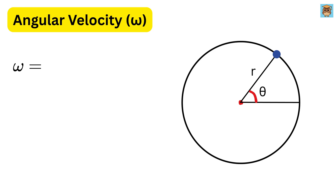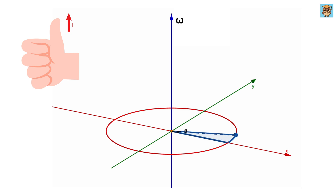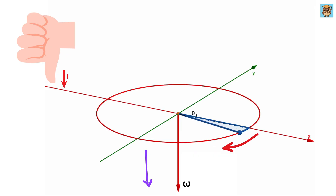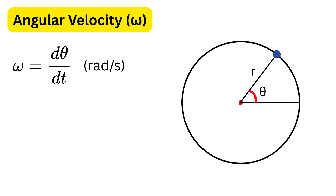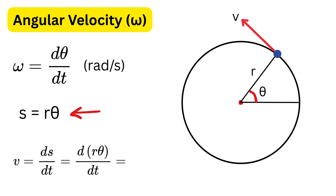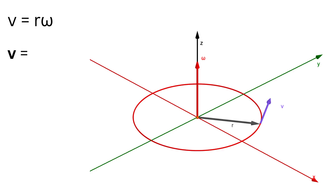Next we have angular velocity. Just as linear velocity tells us how fast position changes, angular velocity is the rate of change of angular displacement, measured in radians per second. Its direction follows the same right-hand thumb rule: counterclockwise rotation gives a vector pointing upward; clockwise gives downward. The relation to linear velocity is v equals r times omega. We can derive this by finding the rate of change of s equals r times theta. In vector form, v equals omega cross r.